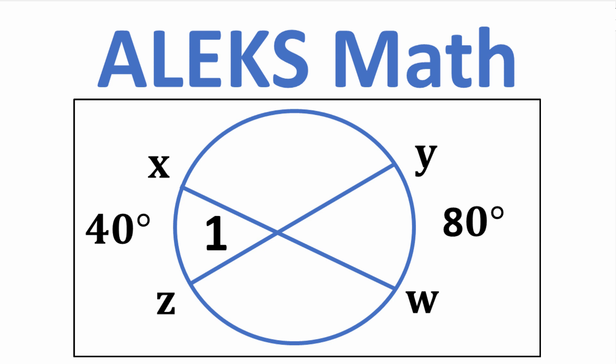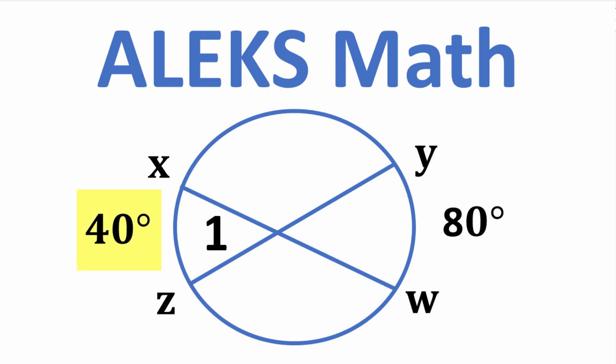So we're looking for angle 1, and here's angle one right there. And we have a circle and two arcs. And this arc right here is 40 degrees, and this arc right here is 80 degrees. So we're looking for the measure of angle one. If you can figure this out, go ahead and put your answer into the comment section.